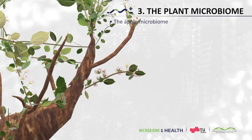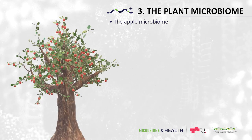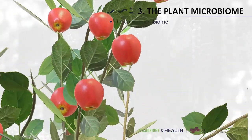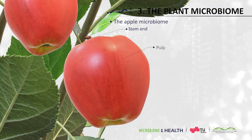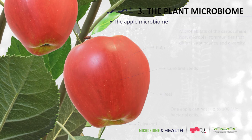The most interesting compartment — at least for us as consumers — is the apple carposphere. The fruit also consists of certain microhabitats, such as the stem end, pulp, the core including the seeds, the peel and calyx end. All of them host microbial communities that differ in diversity and numbers. In one study, it was found that an apple fruit can host up to 100 million bacterial cells. And you'd be surprised — in this study, the majority of them was not found on the peel but inside the core.